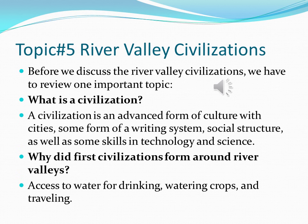The next topic is the River Valley Civilizations. Before we discuss them, we have to review one important topic: what is a civilization? A civilization is an advanced form of culture with cities, some form of writing system, a social structure, as well as skills in technology and science. Why did first civilizations form around river valleys? There was access to water for drinking, watering crops, and traveling. If you get this question on your Regents, you should be able to do really well on it.